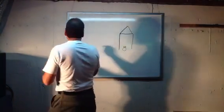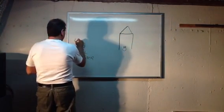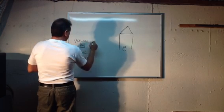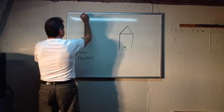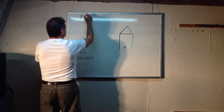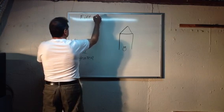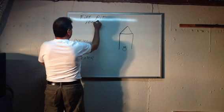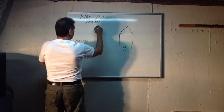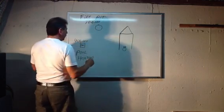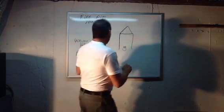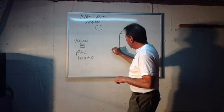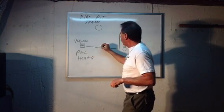Now, the pool heater was 400,000 BTUs, and the fire pit was only 100,000 BTUs. The fire pit and round pit were somewhere in the backyard about right there. So the distance from the gas meter to the pool heater was exactly 100 feet.